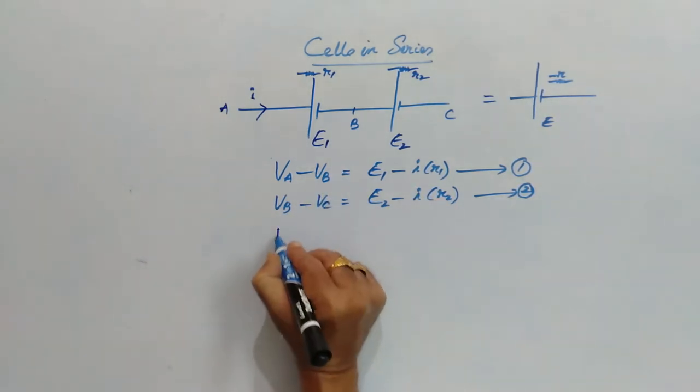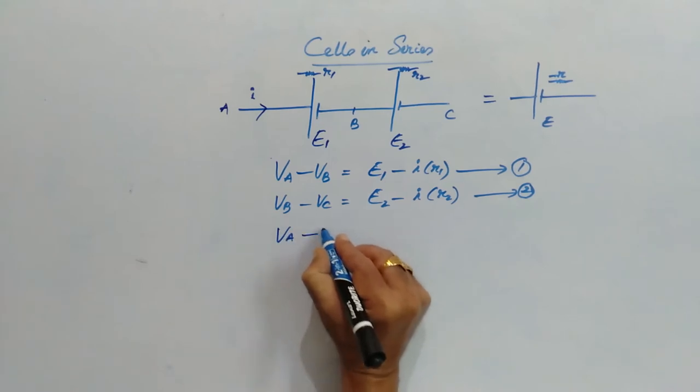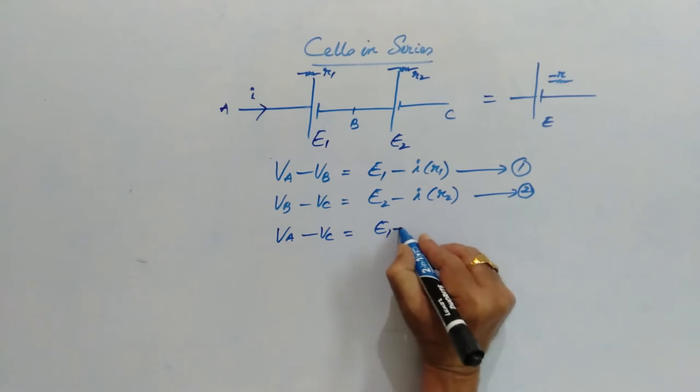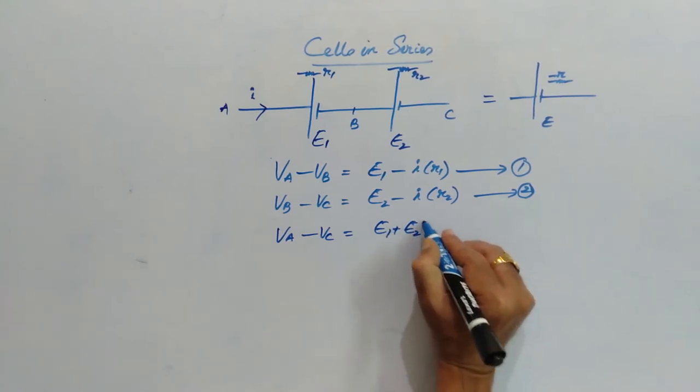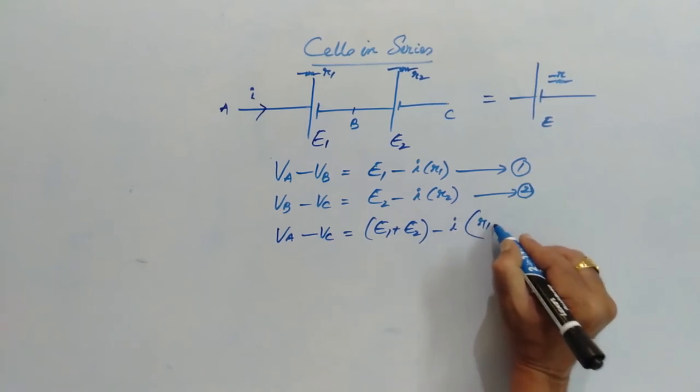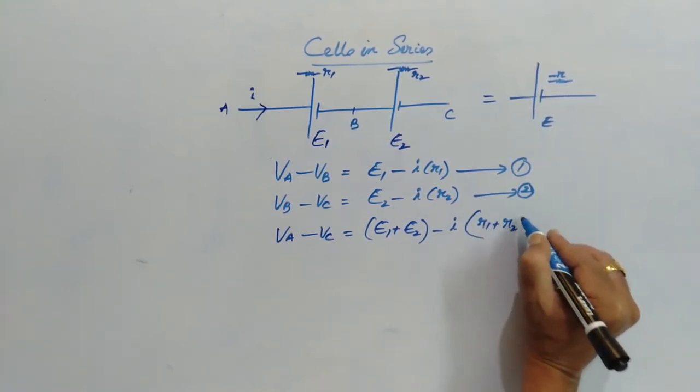Now when I add, I will get VA minus VC which is equal to E1 plus E2 minus, if I take I as common, R1 plus R2.